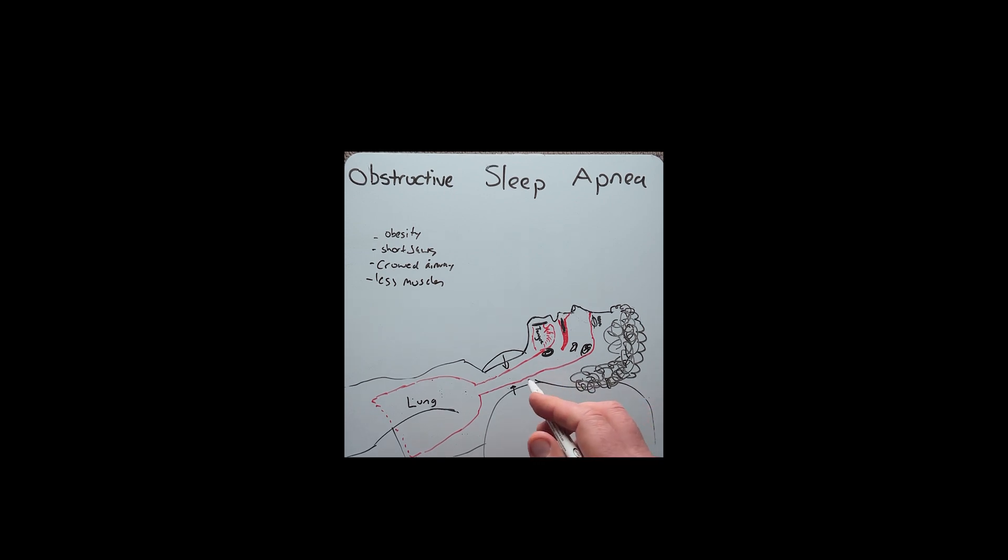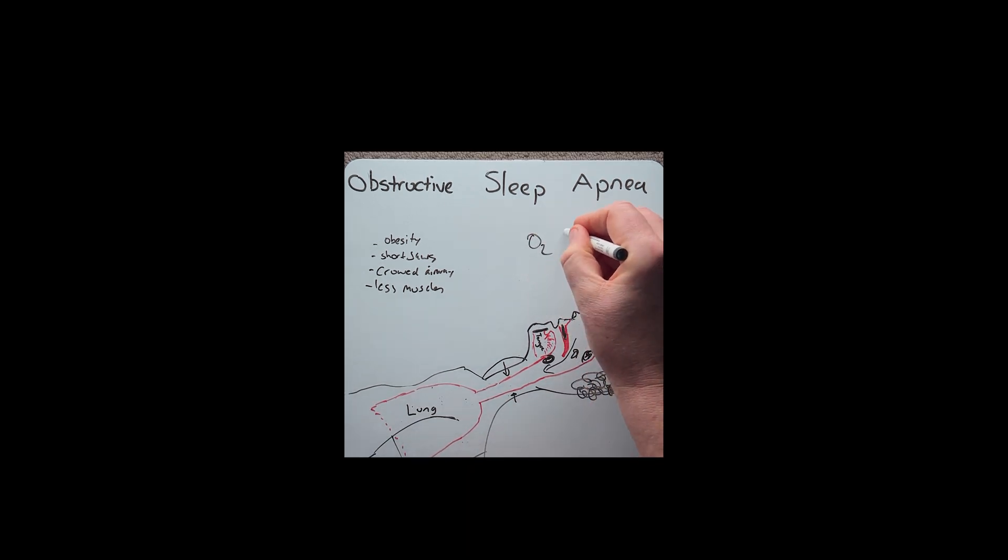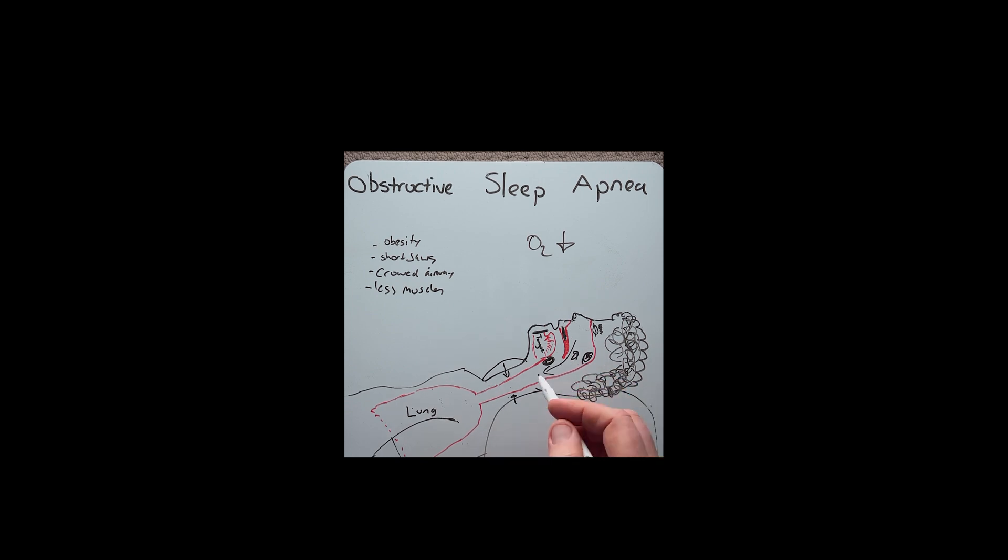As a result, when these individuals go into sleep, their airway starts to obstruct, which prevents the movement of air through their airway. As oxygen starts to drop in their blood, their brain, specifically the medulla, wakes them up to help re-establish that airway.